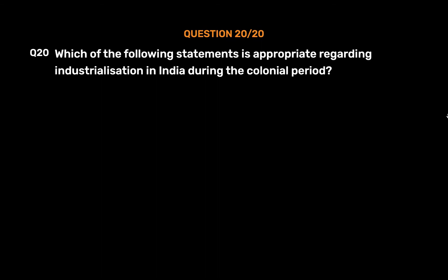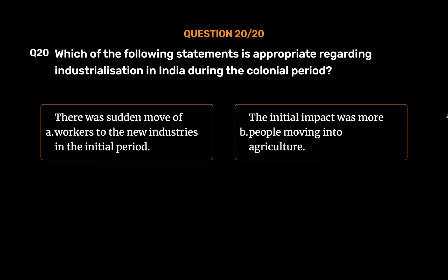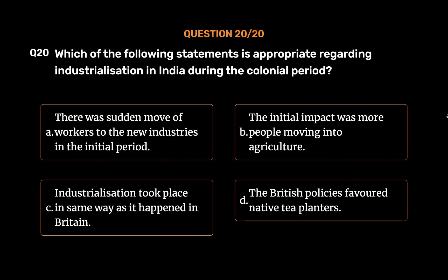Question 20: Which of the following statements is appropriate regarding industrialization in India during the colonial period? Options: A. There was sudden move of workers to new industries in the initial period; B. The initial impact was more people moving into agriculture; C. Industrialization took place in the same way as in Britain; D. The British policies favored native tea planters. The correct answer is Option D: The British policies favored native tea planters.